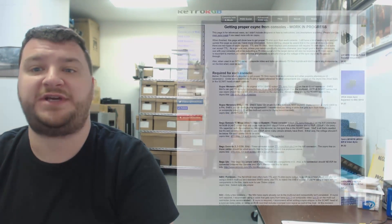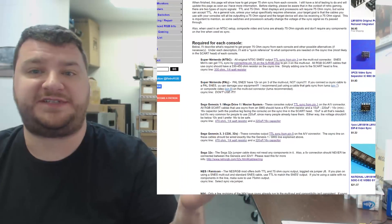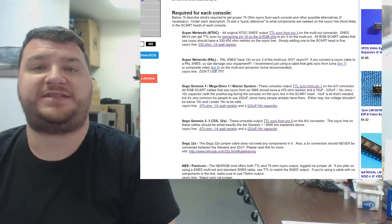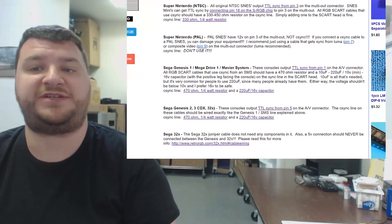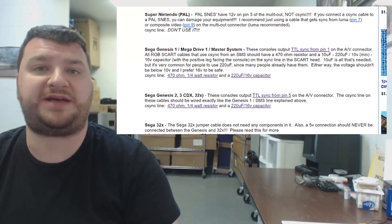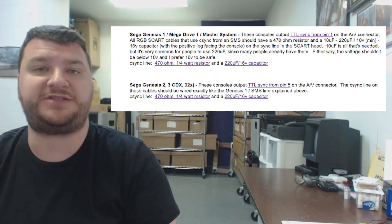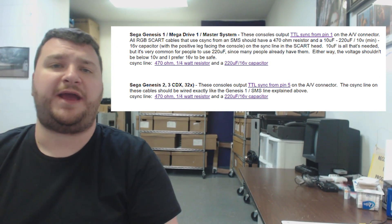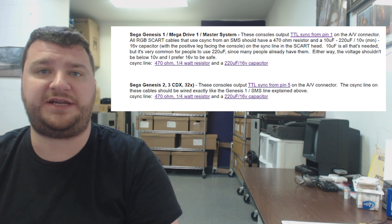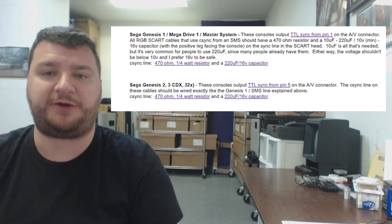First, you'll need to know what the required components are. For this demonstration I'll be testing the sync line on Genesis 2 RGB SCART cables, so I'll just reference the CSYNC page on my site. It says I should expect a 470 ohm resistor on the sync line as well as a capacitor ranging from 10 microfarads to 220 microfarads. And just for the record you'll often see that written as UF but it's microfarads.